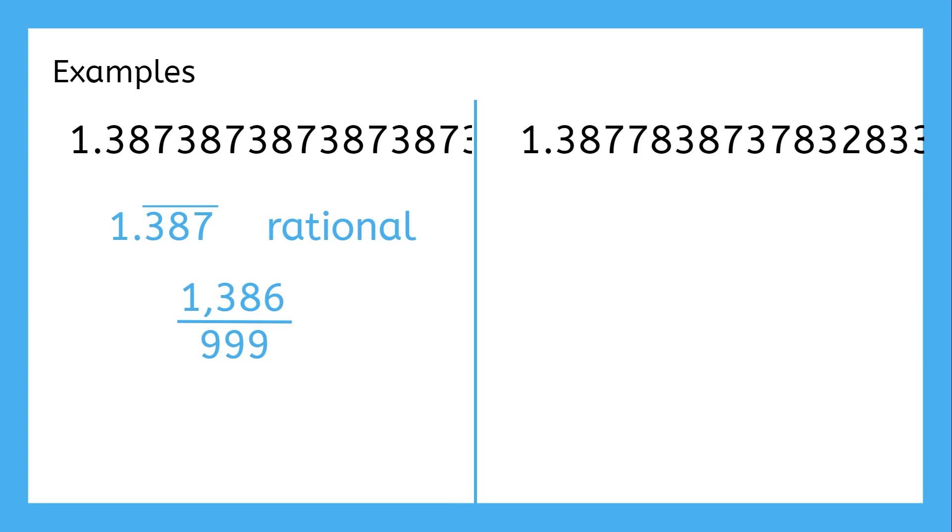The problem with this is that it doesn't repeat. It isn't just .33333 forever, or .383838 forever, or .387387 over and over again. No matter how far we look into the number, the pattern is never being repeated. So, this is an irrational number.